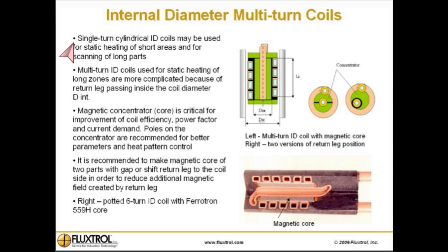Internal diameter multi-turn coils: single-turn cylindrical ID coils may be used for static heating of short areas and for scanning of long parts. Multi-turn ID coils used for static heating of long zones are more complicated because of the return leg passing inside the coil diameter. A magnetic concentrator or core is critical for improvement of coil efficiency, power factor, and current demand.